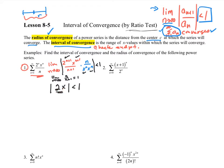To wrap this up, 2x is between negative 1 and 1, so x is between negative 1 half and 1 half. Now here's one of the keys: we have to check the endpoints. We're going to check x equal to negative 1 half, and also x equal to 1 half. We plug those in and see if we get a series that converges. We might have to use one of our previous tests to do that.